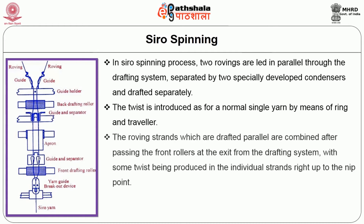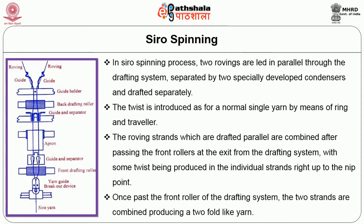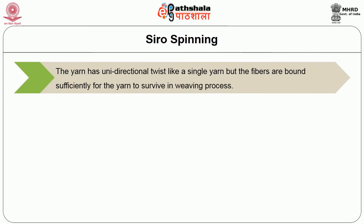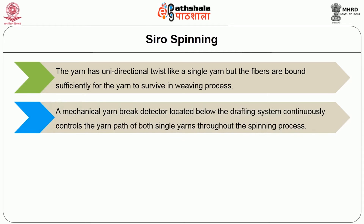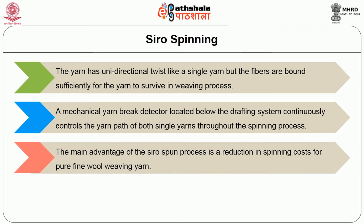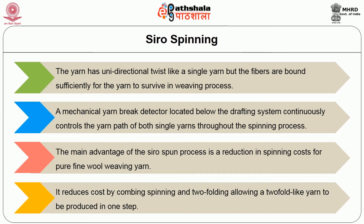The roving strands drafted in parallel are combined after passing the front rollers at the exit from the drafting system, with some twist produced in the individual strands right up to the nip point. Once past the front rollers, the two strands are combined producing a two-fold-like yarn. The yarn has unidirectional twist like a single yarn but the fibers are bound sufficiently for the yarn to survive the weaving process. A mechanical yarn brake detector continuously controls the yarn path of both single yarns throughout spinning. The main advantage of the zero spun process is a reduction in spinning cost for pure fine wool weaving yarn, combining spinning and two-folding to produce a two-fold-like yarn in one step.